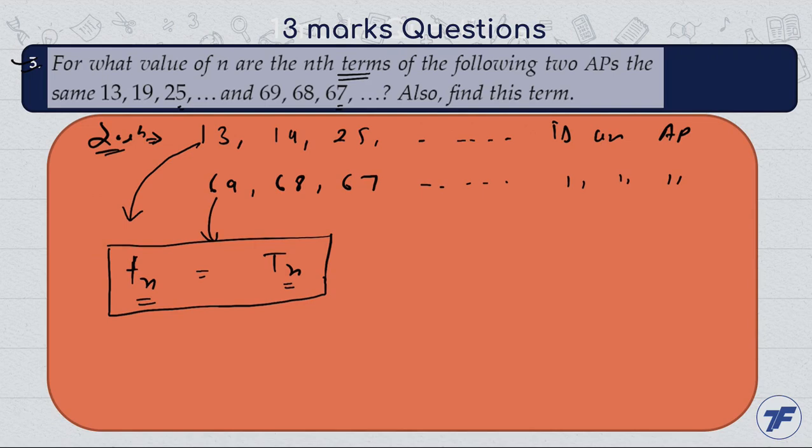So Tn will be solved to find the nth value. For the first AP, we have first term 13. Tn of the first AP is 13 plus (n-1) times d, where the common difference d is 19 minus 13, which equals 6. Consider this equation 1.